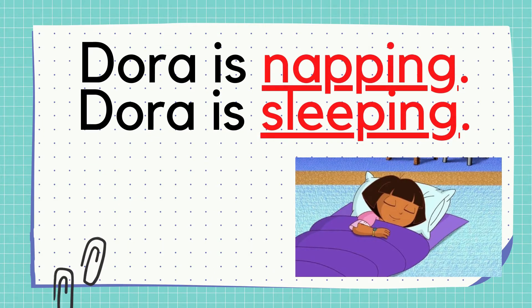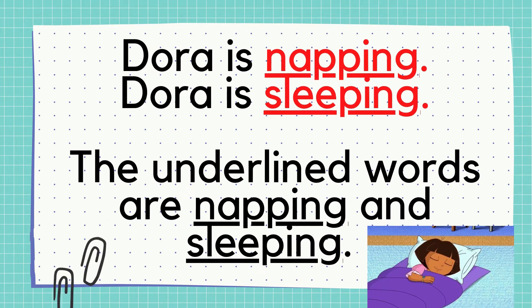Dora is napping. Dora is sleeping. What are the two underlined words? Very good! The underlined words are napping and sleeping. What have you noticed with the two underlined words? Very well! They have the same meaning.